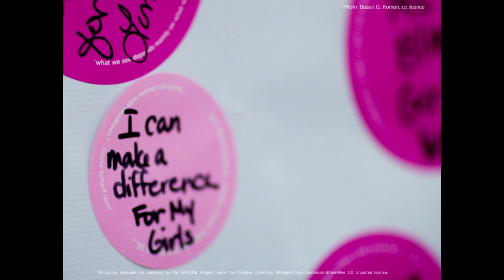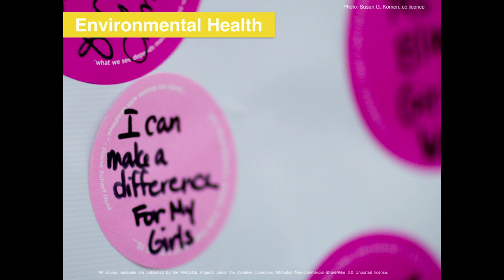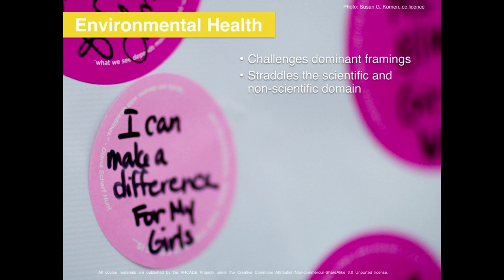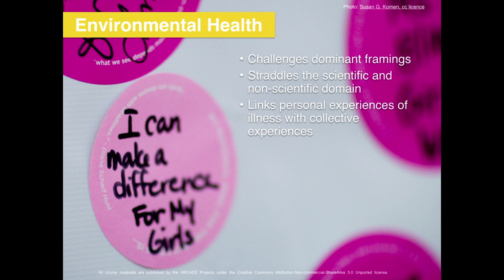So where does this leave us? Environmental health is about producing a body of knowledge that takes different understandings of the body and experiences of the environment into account. It is important because of the ways in which it challenges dominant framings, exposing how economic and political interests might shape government regulatory approaches, and by including non-biomedical and environmental dimensions to a problem. In so doing, it argues that no one category of people can claim to have a valid explanation, or what Longino calls a privileged relationship to truth. It aims to straddle the scientific and non-scientific domains by bringing laypeople and experts closer together, and by connecting up activists with policymakers and health officials who can make change happen. It links personal experiences of illness with collective experiences, and by so doing politicizes these experiences, drawing connections between institutions, politics, and economics, and thinking about who makes decisions about causing, preventing, or treating disease.